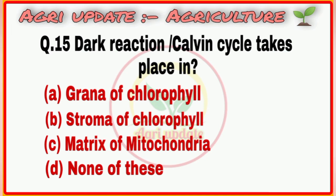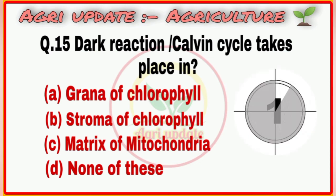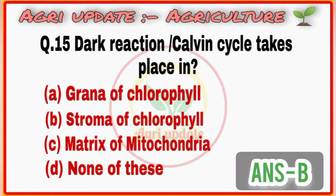Question number 15: Dark reaction or Calvin cycle takes place in. First option is grana of chloroplast, second option is stroma of chloroplast, third option is matrix of mitochondria, fourth option is none of these. The right answer is option number B, stroma of chloroplast.